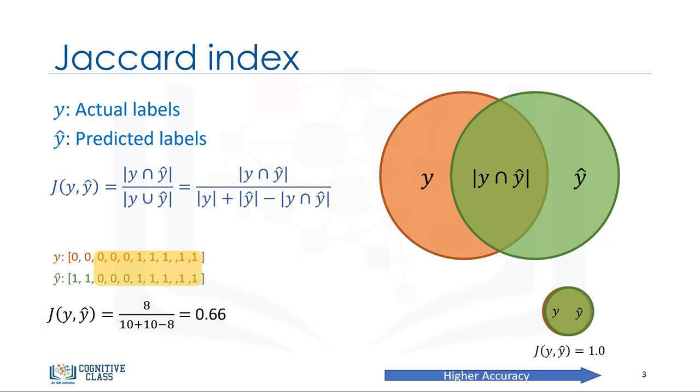If the entire set of predicted labels for a sample strictly matches with the true set of labels, then the subset accuracy is 1.0. Otherwise, it is 0.0.